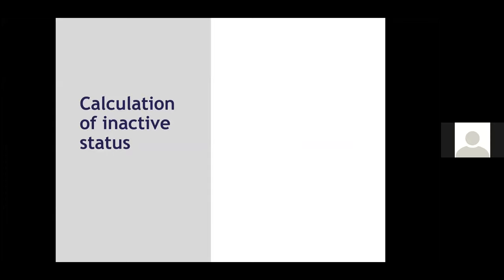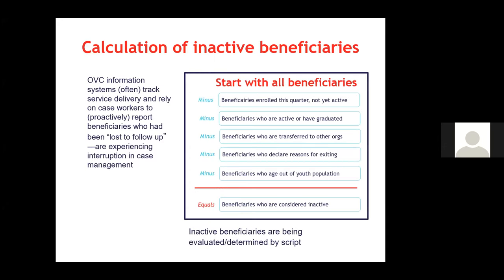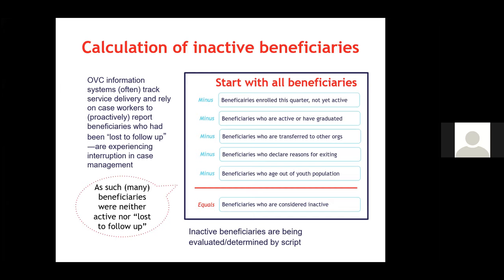Moving on to the inverse — how do we identify children who did not receive the requisite services? Historically, programs identified these children through self-report, relying on caseworkers to proactively report those who were lost to follow-up or experiencing an interruption in case management. Many such reports were not made, leaving beneficiaries neither active nor lost to follow-up. We describe scripted logic used to identify these inactive beneficiaries, essentially starting with all beneficiaries and subtracting different subcategories to ultimately identify those who are considered inactive.